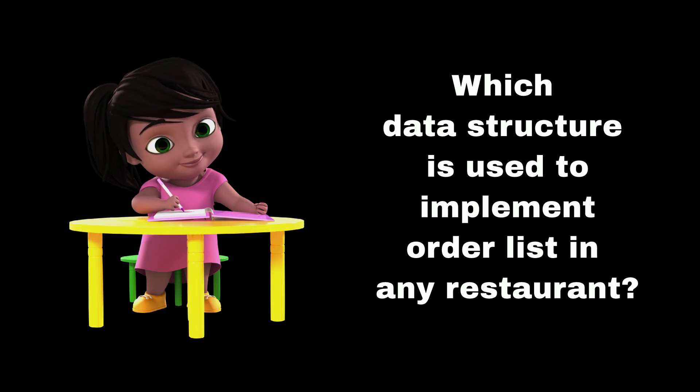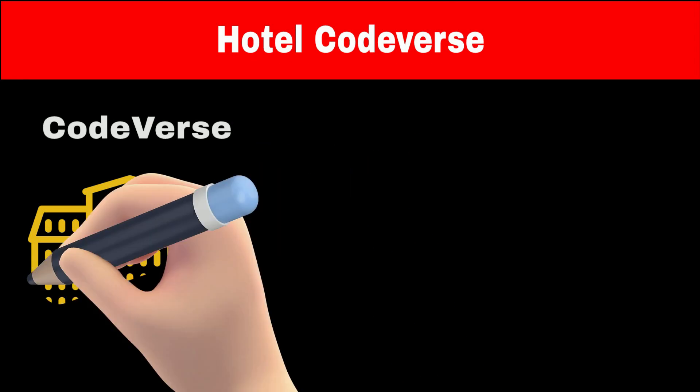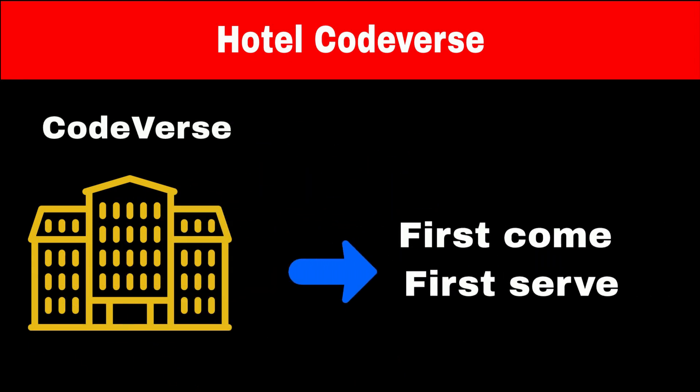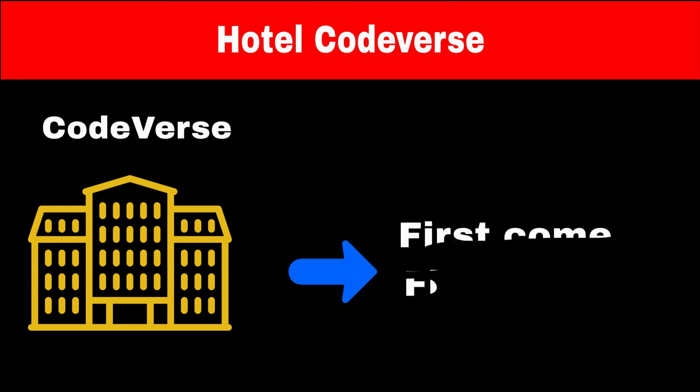Do you know which data structure is used to implement an order list in any restaurant? Consider I own a hotel named Codeverse where I accept orders online. Now generally for the same food item, whoever puts the order first will get the delivery of food first — means first come, first serve.